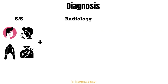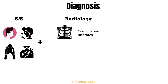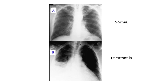We obtain a chest x-ray to look for consolidations and infiltrates. Infiltrates can be composed of white blood cells, protein, pus, blood, et cetera, and they accumulate in the alveoli due to the infection — all part of the immune response. On a chest x-ray, you will see consolidation. Here we have a chest x-ray comparing a normal lung on top to a lung with bacterial pneumonia on the bottom. On the lower part of the lung with pneumonia, you can see how white it is, because that part of the lung is no longer filled with adequate air but instead has these infiltrates.